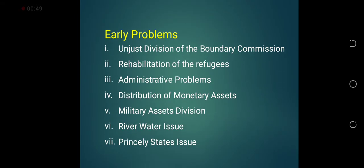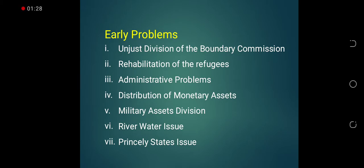The major problems that Pakistan faced in 1947 were: number one, the unjust division by the boundary commission — some Muslim majority areas were handed over to India; rehabilitation of the refugees; administrative problems which the government of Pakistan faced right after independence; the distribution of monetary assets between Pakistan and India; military assets division, which was greatly disturbed by the hostile attitude of the Indians; the river water issue in 1948, due to which Pakistan faced a lot of economic setback; and the princely states issue in 1947.